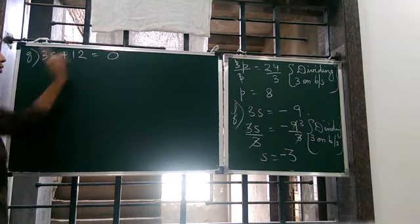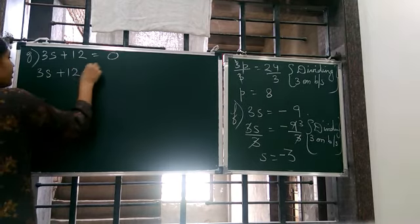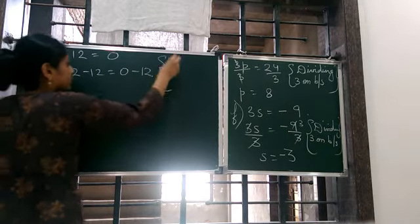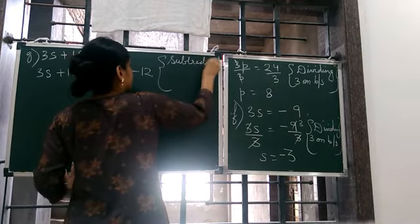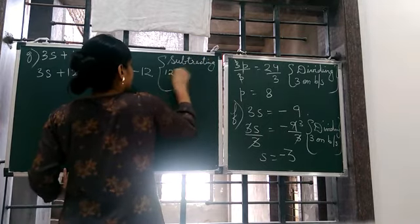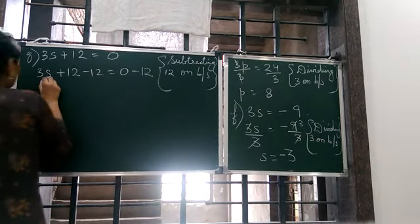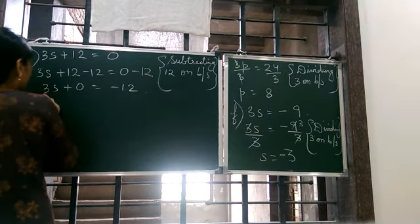Minus 12, minus 12 on both sides. So 3s plus 12 minus 12 is equal to 0 minus 12. And what we write here? Subtracting 12 on both sides.